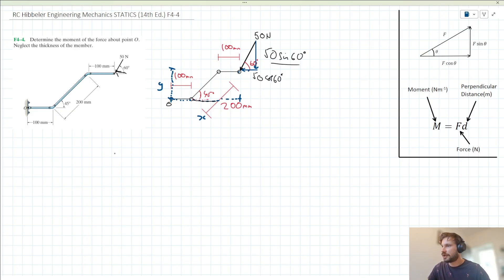So X equals 100 millimeters plus the horizontal component of this 200 millimeter length, which is 200 cos 45, plus another 100. When we put this into our calculator, that gives us 341.4 millimeters. To make this more workable, I'll convert to meters: 0.3414 meters.